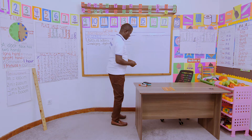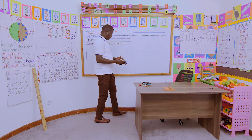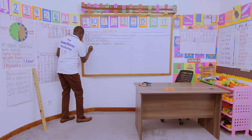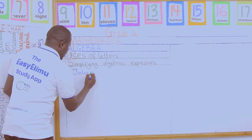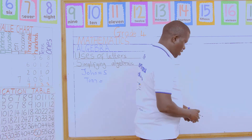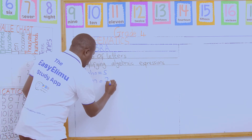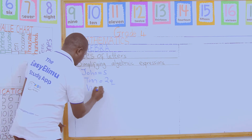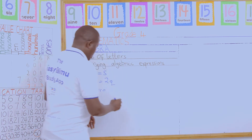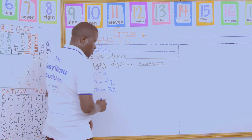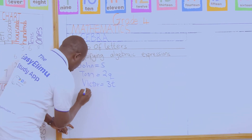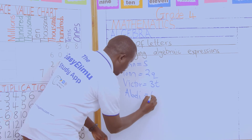The first learner is John. John has S counters. The second one is Tom. Tom added two Q counters. Victor also added three T counters. And the last person is Abdi. Abdi had four S counters.